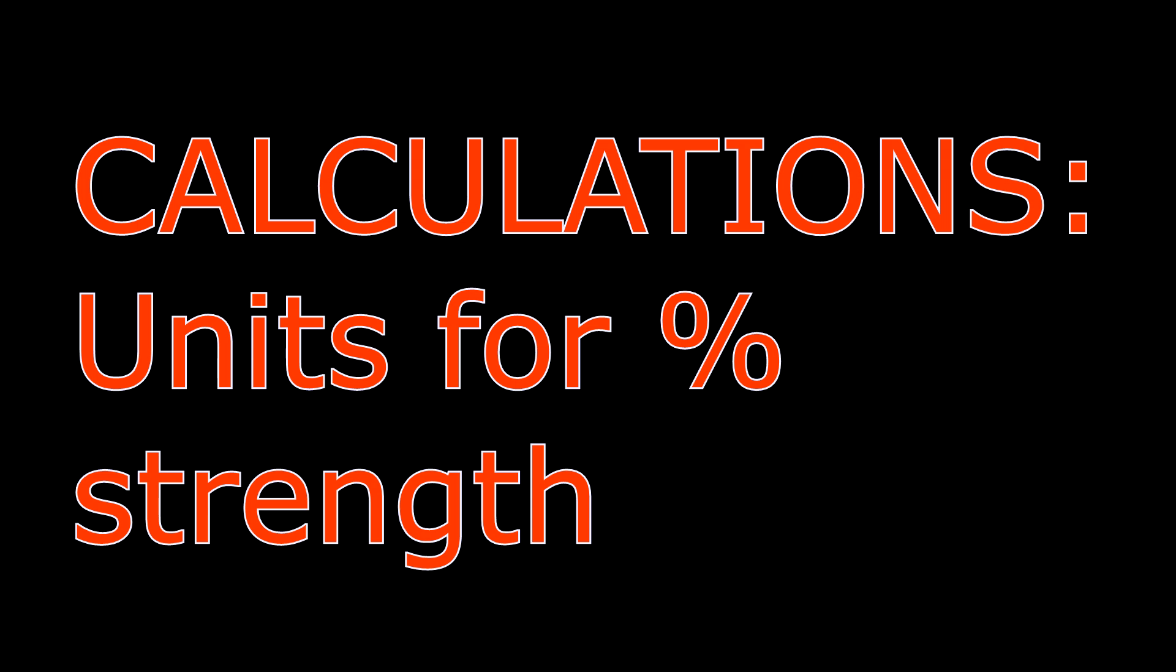Something to keep in mind with weight to volume is things like D5W—your dextrose, the five percent—that's a weight to volume. So five percent means five grams in every 100 milliliters. Same goes for something like normal saline, because that's grams per milliliter. Keep those in mind.